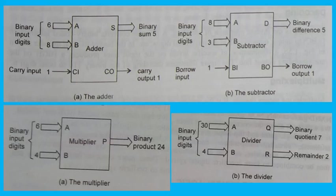The figure illustrates the subtraction of the binary equivalent of 3 from the binary equivalent of 8, with a borrow input of 1, which results in a binary difference term 5 and a borrow output term 1.